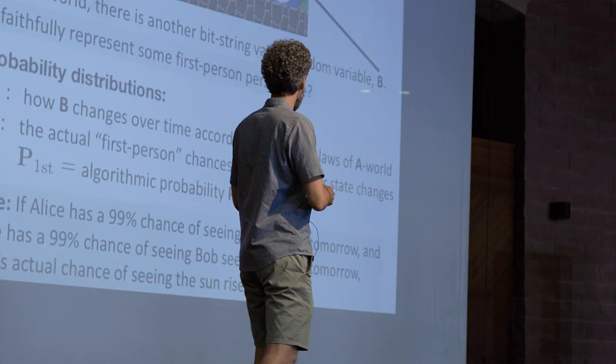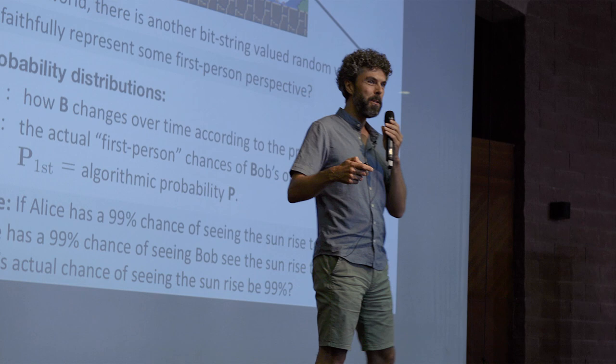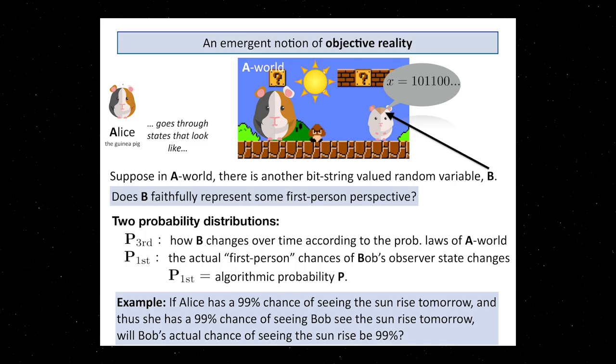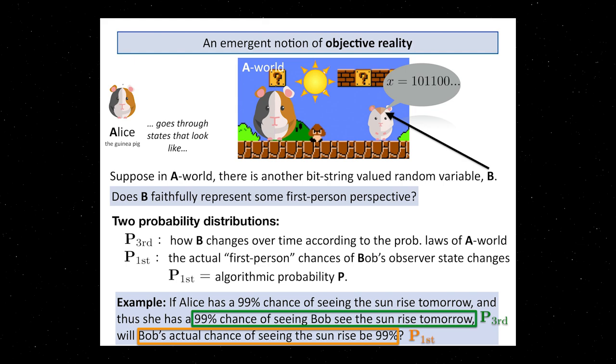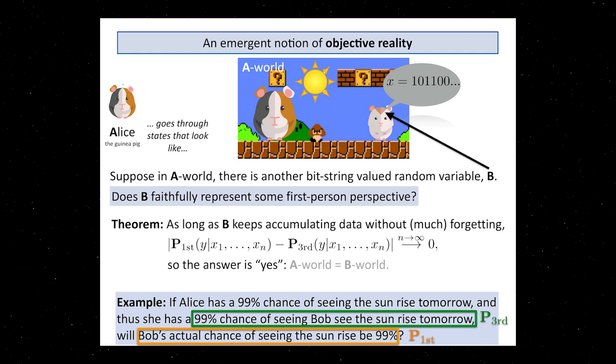Here's an example. Suppose every day in April, the sun is rising. Alice really has a 99% chance of seeing the sunrise tomorrow. That means that Alice has a 99% chance of seeing Bob see the sunrise tomorrow. That would be the third person probability. But will Bob's actual chance of seeing the sunrise be 99%? Will it be the first person probability? What you can show here as a theorem, in the long run, these two will actually agree. So if Bob, that other thing here, contains enough data, then first and third person perspective will agree and give the same probabilities.